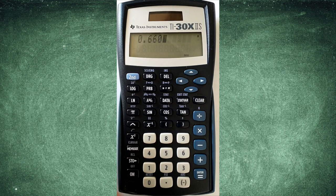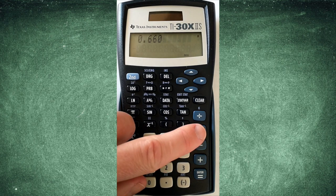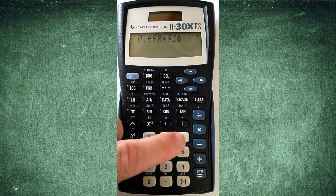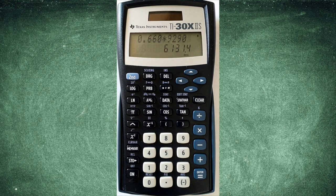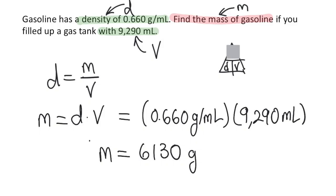Now I'll type this into my calculator. 0.660 times 9290. I'm going to round the answer to three digits since both of my given values had three significant digits and so the answer is 6,130 grams.